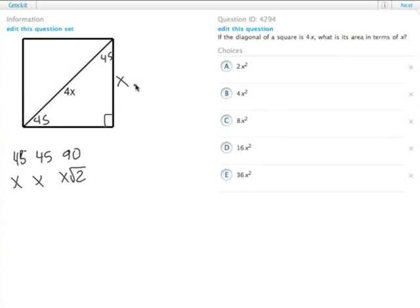Maybe I should use a different variable other than x. Let's call the side s. So if s is the side of the square, s times the square root of 2 is what 4x equals.